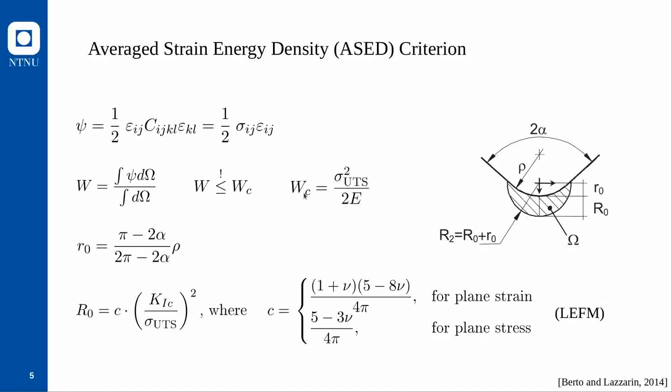We now want to run the same analyses using the strain energy density. The strain energy density is equivalent to the Helmholtz free energy. We average it over a certain integration volume omega to obtain a load parameter, and once that load parameter reaches a critical value, failure occurs. The critical value is a material property derivable from the tensile strength and Young's modulus, consistent with an unnotched specimen.